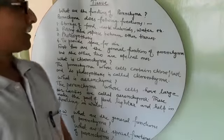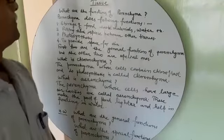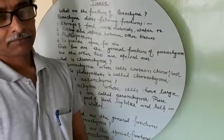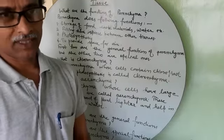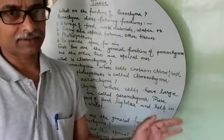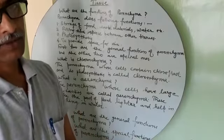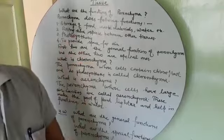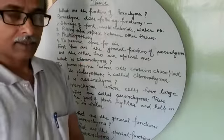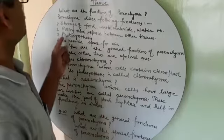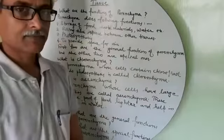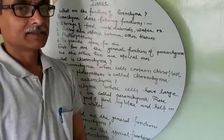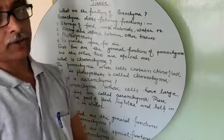The other general function is filling the space between the other tissues and the cells of other tissues. These are its general functions. Another function is photosynthesis, and the fourth one is it provides spaces for air.